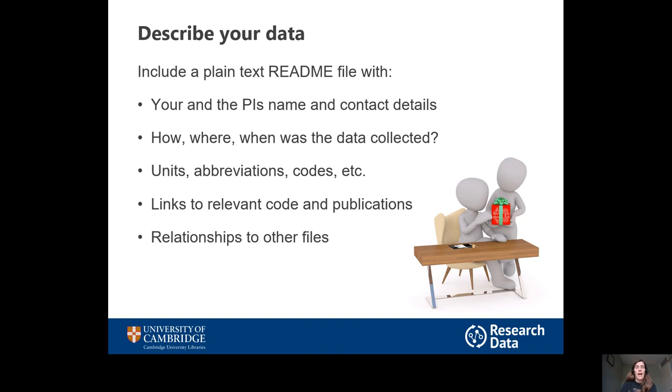If there are publications related to the data or code, give links to those so people can cross-reference. Also, if there's more than one file in your dataset, try to explain how they relate to each other — for instance, you might have a spreadsheet with a list of a set of interviews and then individual transcripts for each interview. Try to explain that.